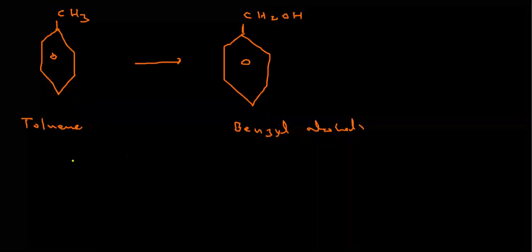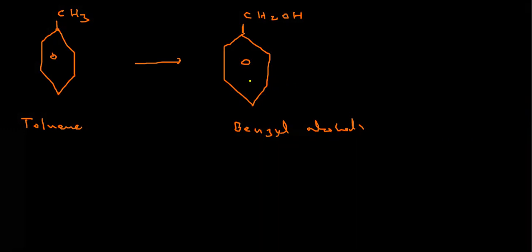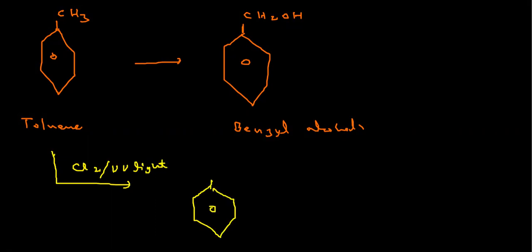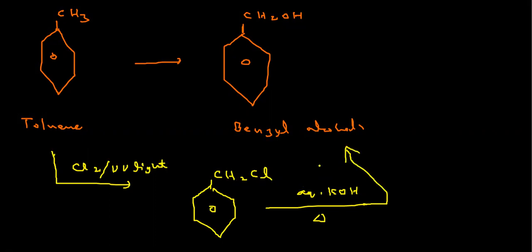So how can we conduct this conversion? We know that whenever there is a halogen and we conduct a reaction with aqueous KOH, it forms OH. So we want to bring a halogen to the CH₃ group — let's do chlorination in the presence of UV light. Then we get benzyl chloride: it becomes CH₂Cl. Now when you do aqueous KOH, KOH brings the OH group, so chlorine is removed and OH comes in. Finally you get benzyl alcohol — CH₂OH. This is how we conduct this kind of conversion.